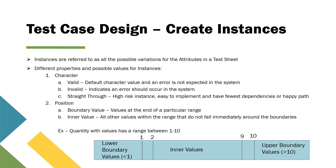All other values within the range that do not fall immediately around the boundaries are known as inner values in Tosca test case design sheets. In the quantity example, 1 and 10 are the boundaries, values between 2 and 9 are the inner values. Values outside the boundaries — like 11, 12, 13 greater than 10 — are upper boundary values, and values lower than 1 such as 0 or negative values are lower boundary values. You can toggle the position of your instances based on what kind of scenarios you want to design for your test cases.